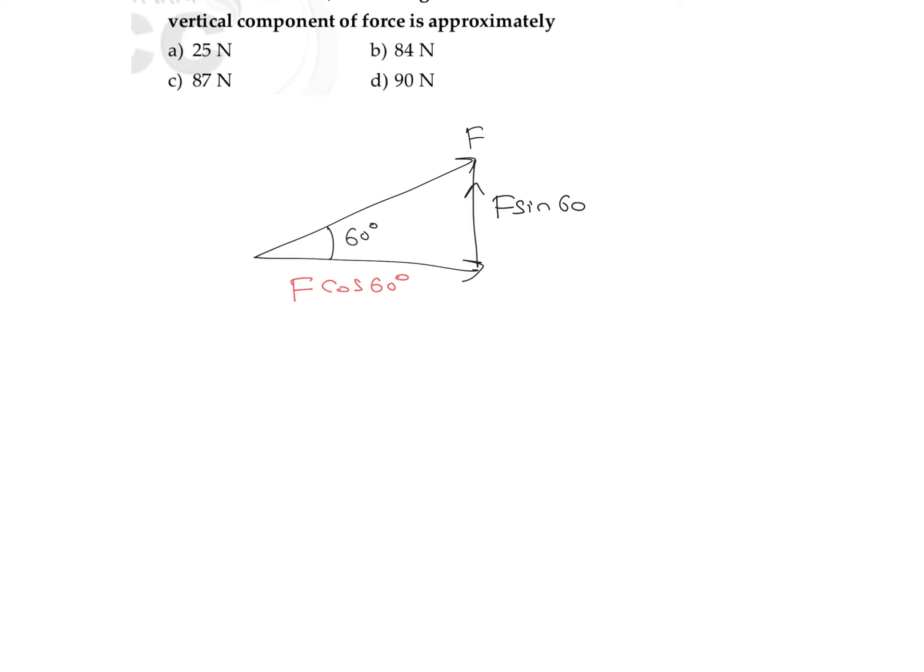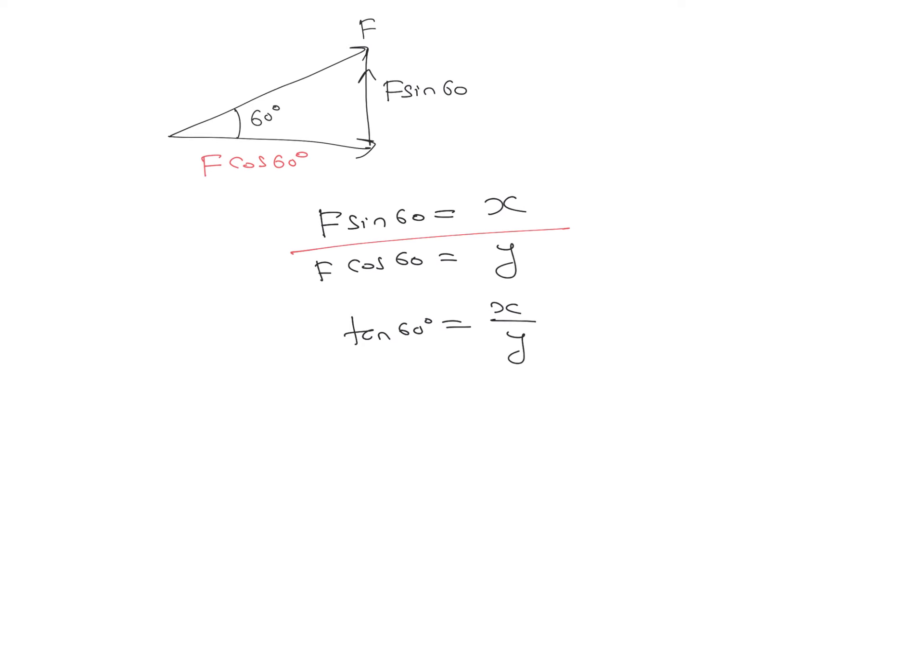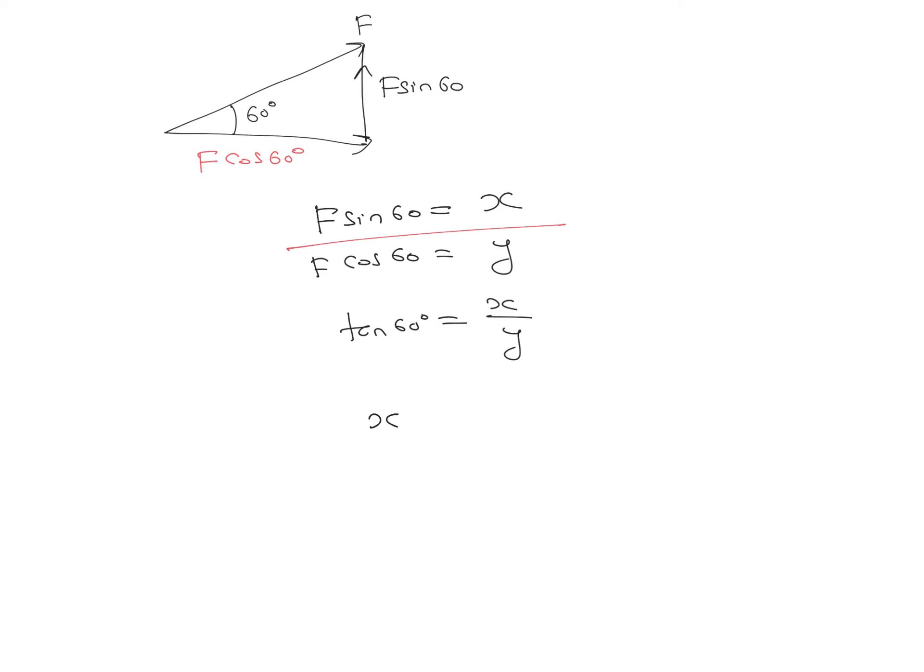If we write F sine 60 as X and F cos 60 as Y, and divide these two equations, F and F get cancelled. Sine 60 by cos 60 can be taken as tan 60, which equals X divided by Y. Here Y is the component in the horizontal direction, so X equals Y times tan 60.